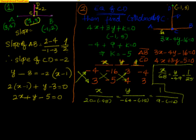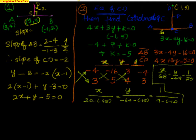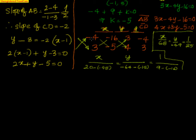The line 3x - 4y - 16 = 0 has a perpendicular line of the form 4x + 3y + k = 0. Since it passes through (-1, 3), substitute: 4(-1) + 3(3) + k = 0, which gives -4 + 9 + k = 0, so k = -5. Now I know the equation of AB and the equation of CD. I'll use cross multiplication to find the intersection point.